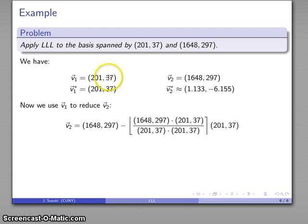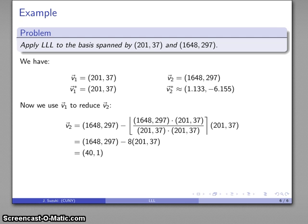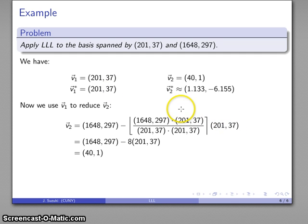Now I want to use V1 to reduce my working vector. I'll take my working vector and subtract the rounded dot product, which gives me 41 as my new vector V2. An important note for future reference: the coefficient here is computed based on the Gram-Schmidt vector, but it's multiplied by the lattice vector. With just two basis vectors the Gram-Schmidt vector and the lattice basis vector are the same, but in a three-vector example they will be different — something to keep in mind.